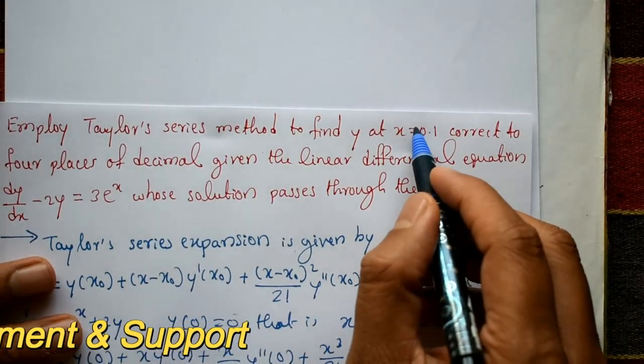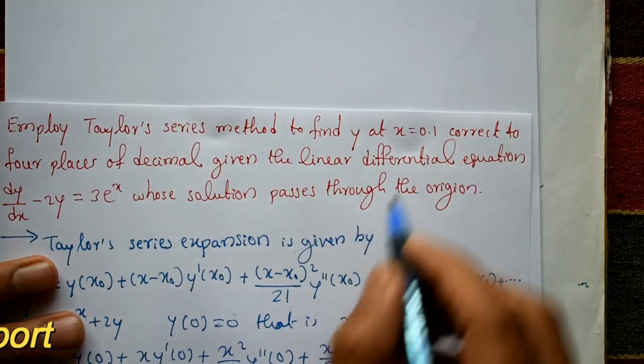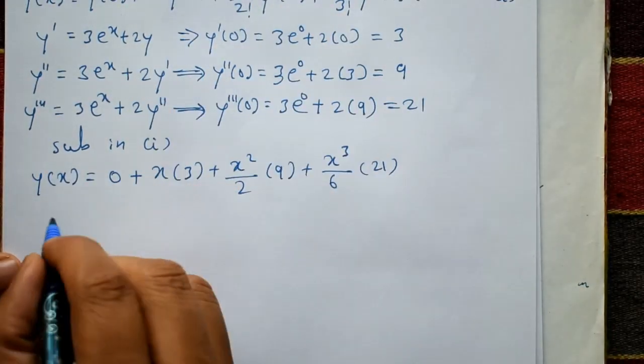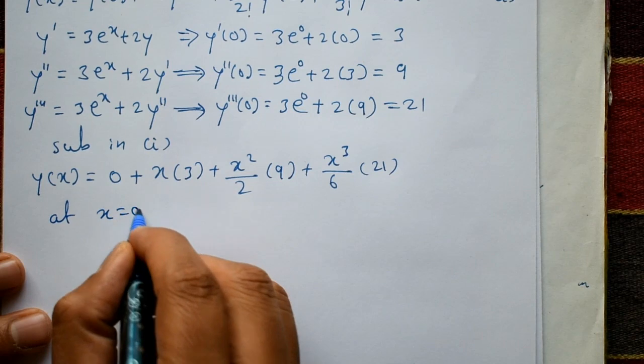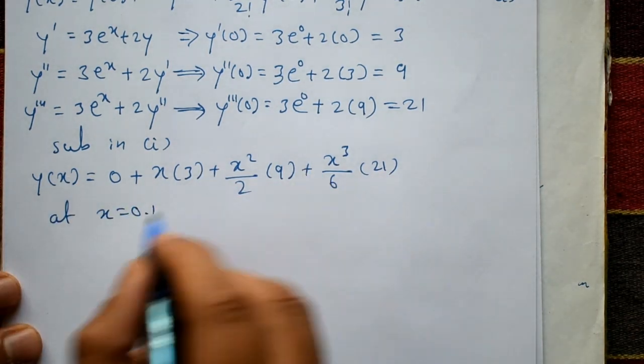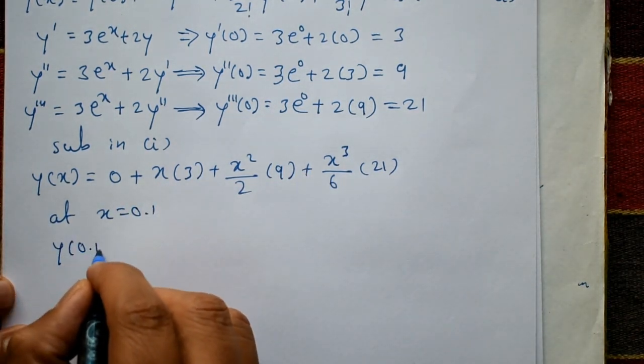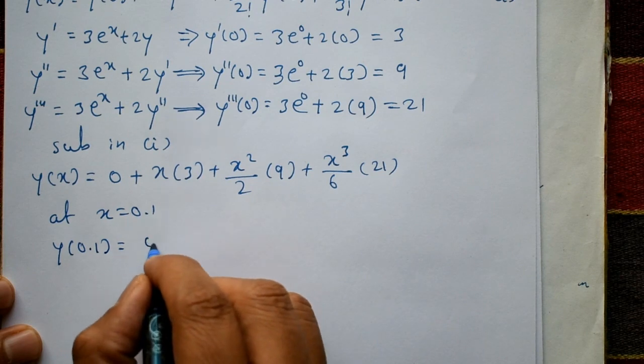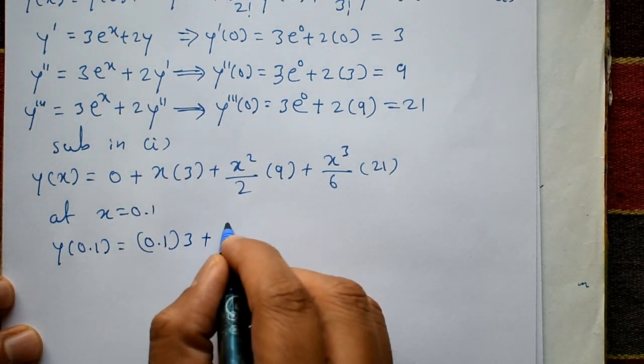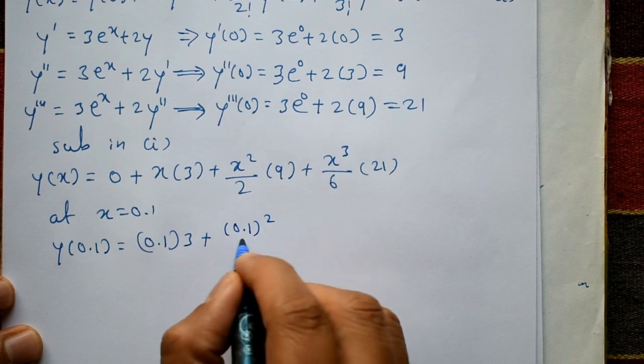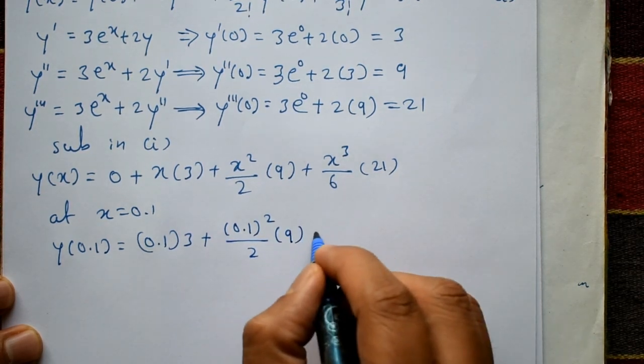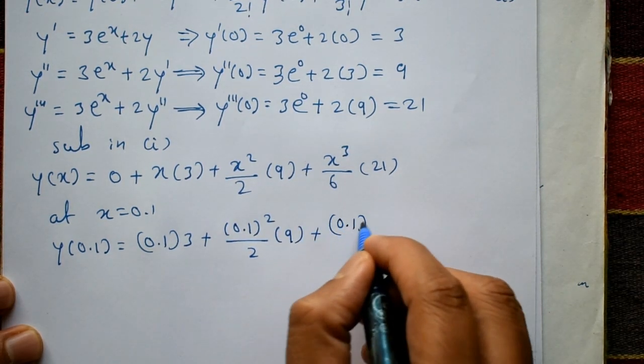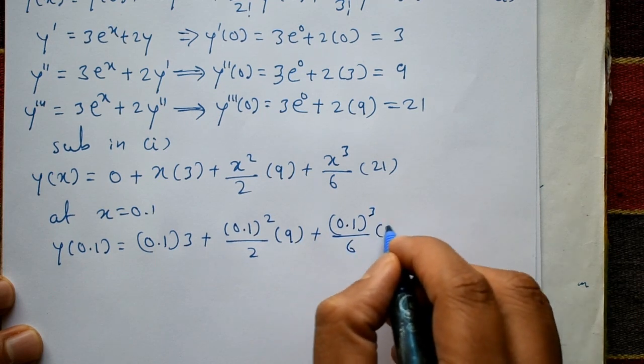Finally find the value of y(0.1). At x = 0.1, y(0.1) = 0.1(3) + (0.1²/2)(9) + (0.1³/6)(21).